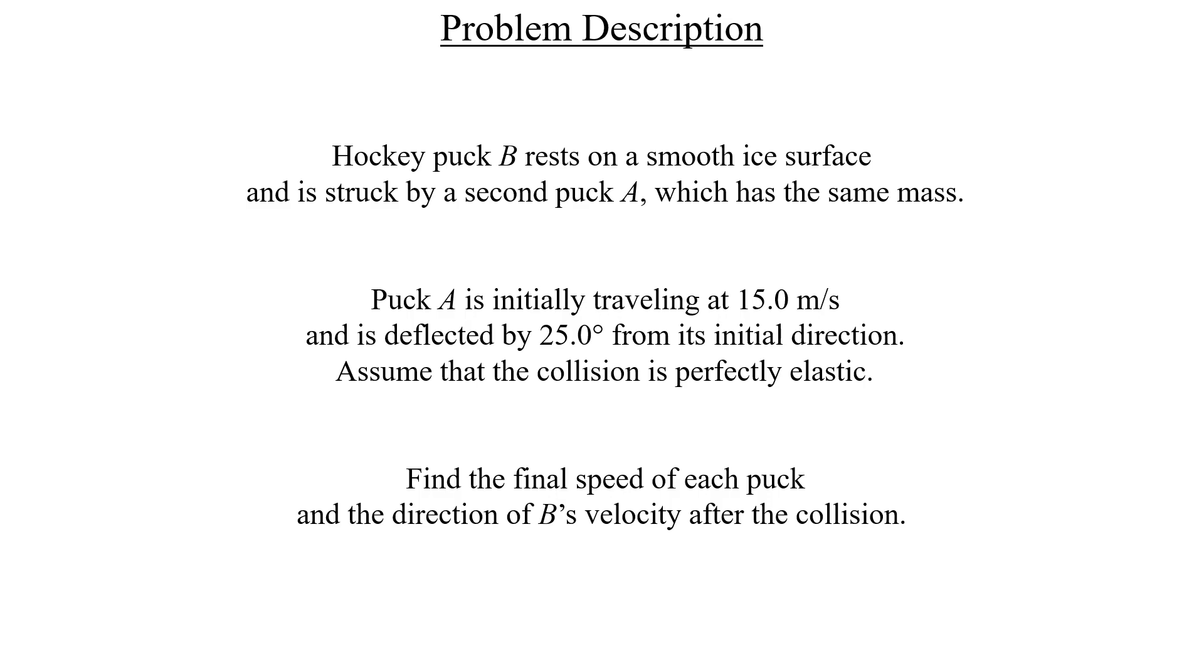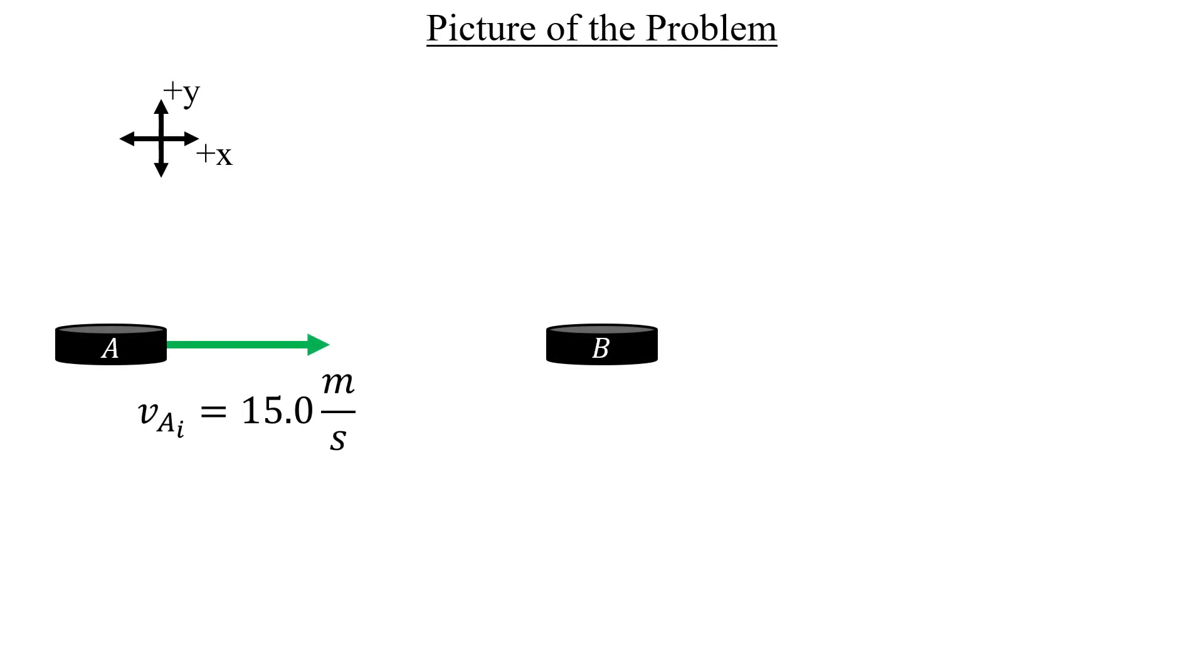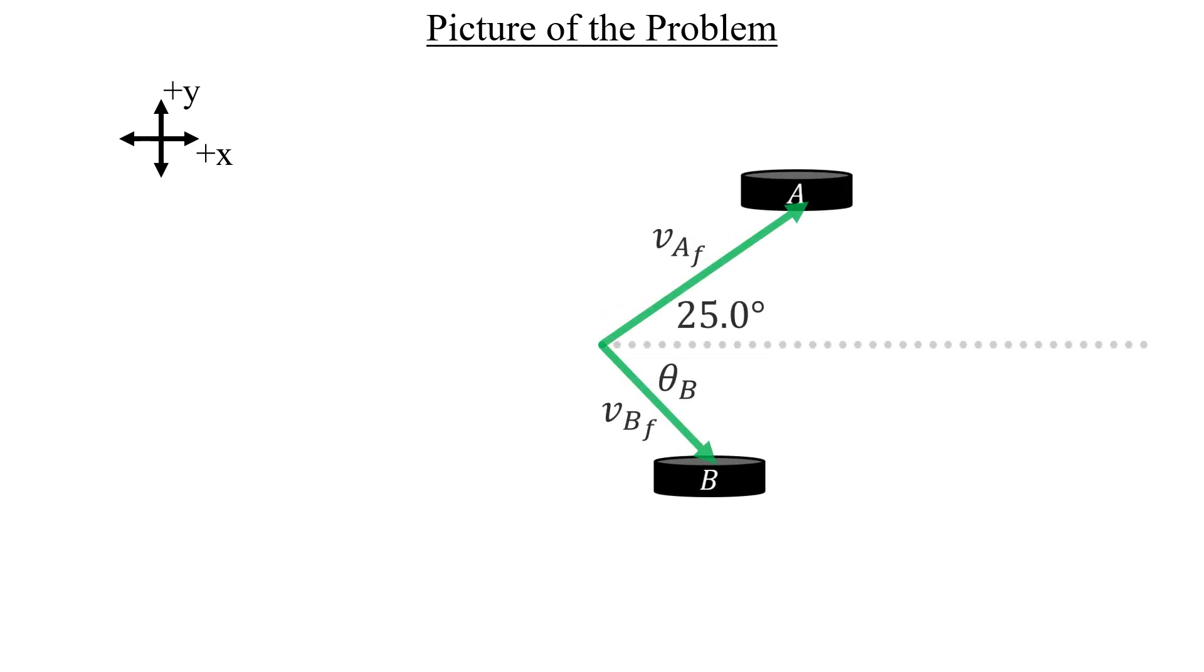The situation plays out like this. Puck A moves horizontally towards puck B at 15 meters per second in the positive x direction. They collide elastically and then fly off at different angles, with puck A deflected at 25 degrees relative to the x-axis and puck B at some unknown angle. The final velocities of both pucks are unknown as well.